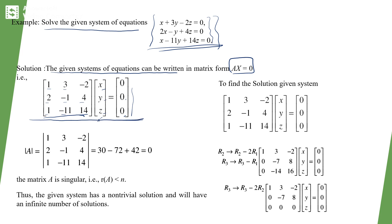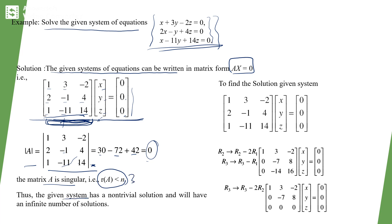We find the rank of the matrix. Computing the determinant: 1·(−1·14 − (−11)·4) = 1·(−14 + 44) = 30 − 72 = −42... which equals 0. Since the determinant is 0, the matrix is singular and the rank is less than n (less than 3). Therefore the system has a non-trivial solution — infinitely many solutions.